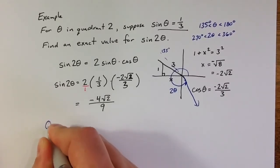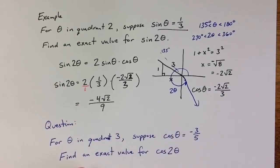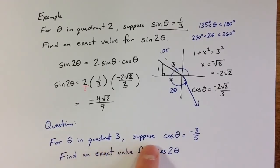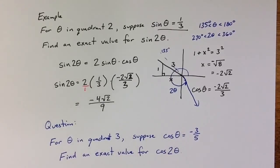Let me end the video with a question. For an angle theta in quadrant 3, suppose that cosine of theta is negative 3 fifths. Try to find an exact value for cosine of 2 theta. I hope you enjoyed the video. Thanks for watching.